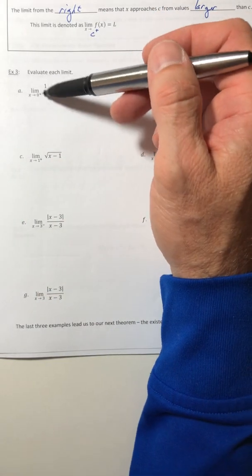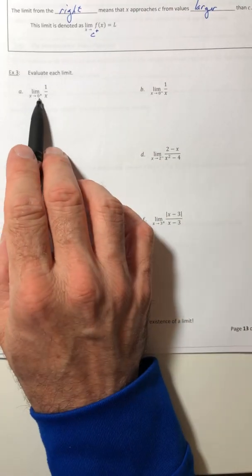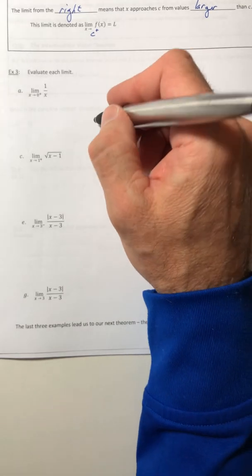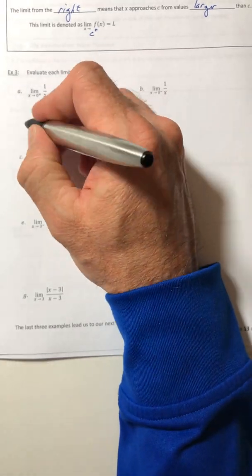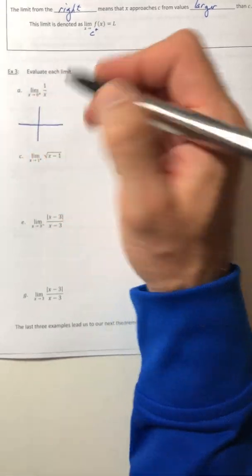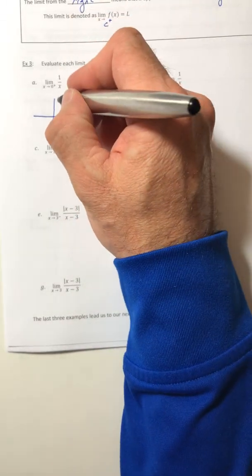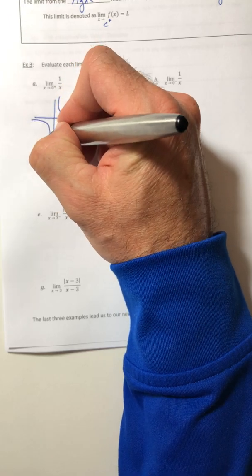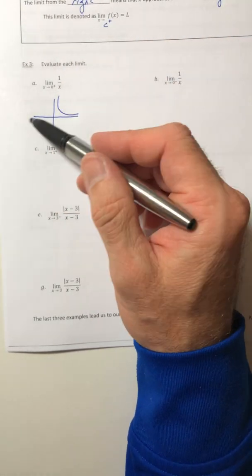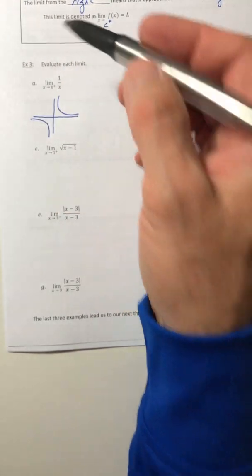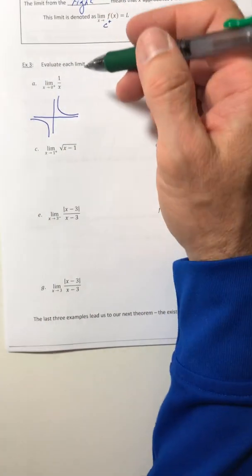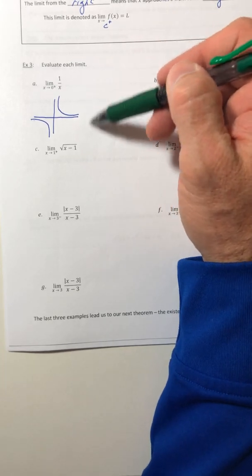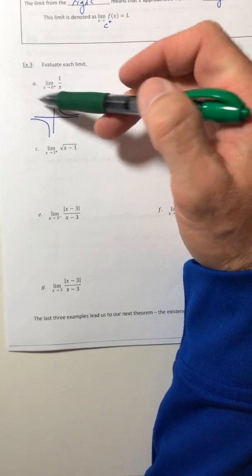So like example A, X is approaching zero, well I can't plug in zero or manipulate it. So instead let's just graph it. So the graph of one over X looks like that's the two curves and they're split. So I just want where X is approaching from the right side. So the right side would be over here, this is the right, this is the left.